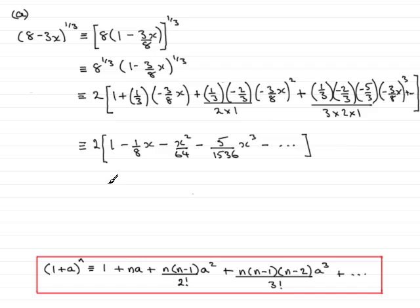All we need to do now is just times through by the 2, and you get 2 minus 2 eighths, which is a quarter x. Then you get 2 times minus 1 64th, which is minus 1 32nd, x squared. And 2 times the last term becomes minus 5 over 768. And that'll be x cubed, and minus and so on. So even though they said go to the term in x cubed, make sure you've got this last bit on here. So that brings us to the end then of part A.